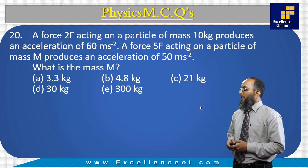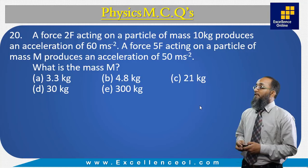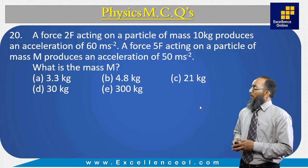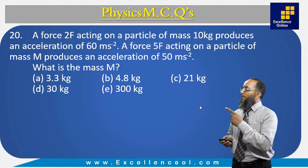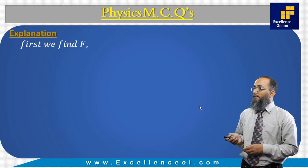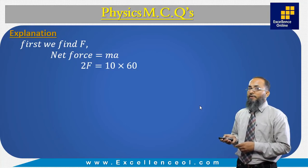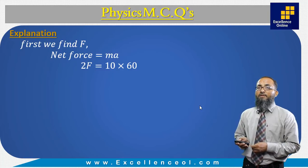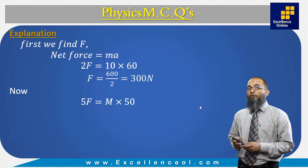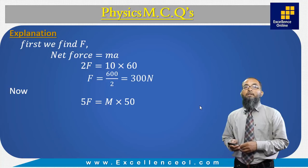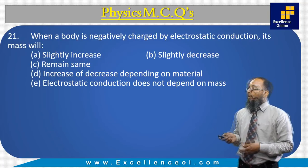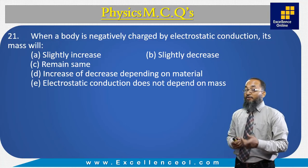A force 2F acting on a particle of mass 10 kg produces an acceleration of 60 m/s². A force 5F acting on a particle of mass M produces an acceleration of 50 m/s². From the first case: 2F = 10 × 60, giving F = 300 N. For the second case: 5F = M × 50, so M = 5 × 300 / 50 = 30 kg. The correct answer is 30 kg.